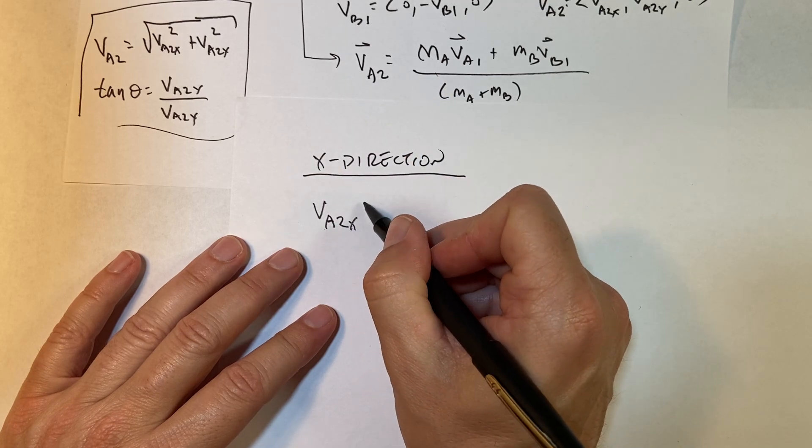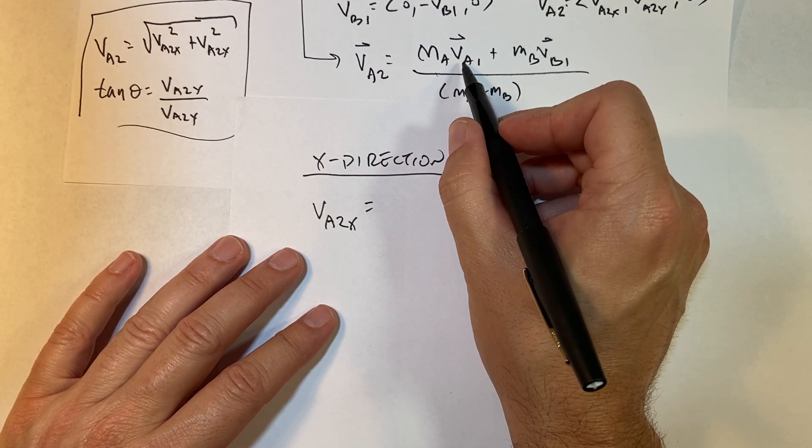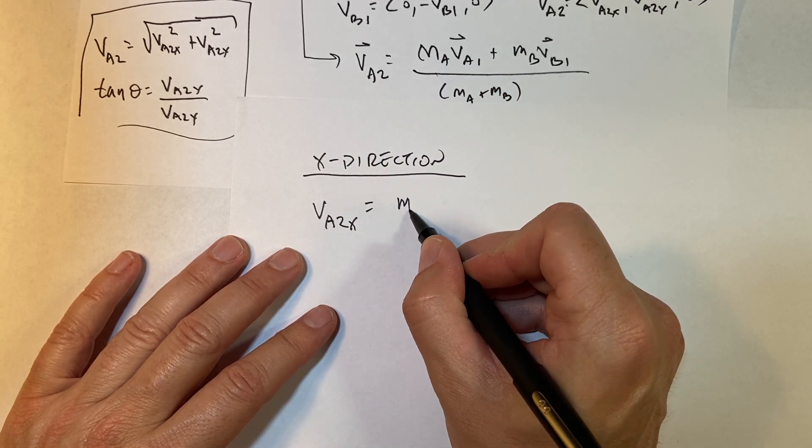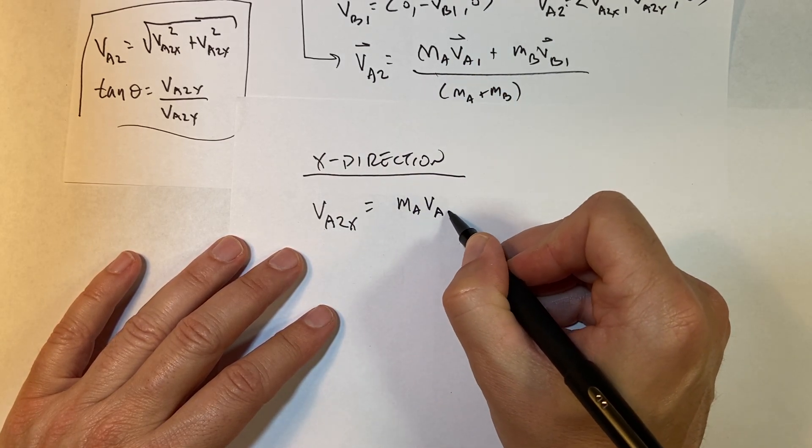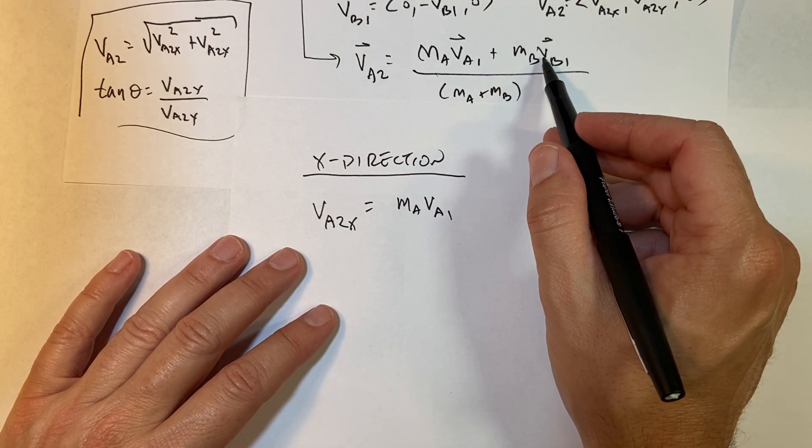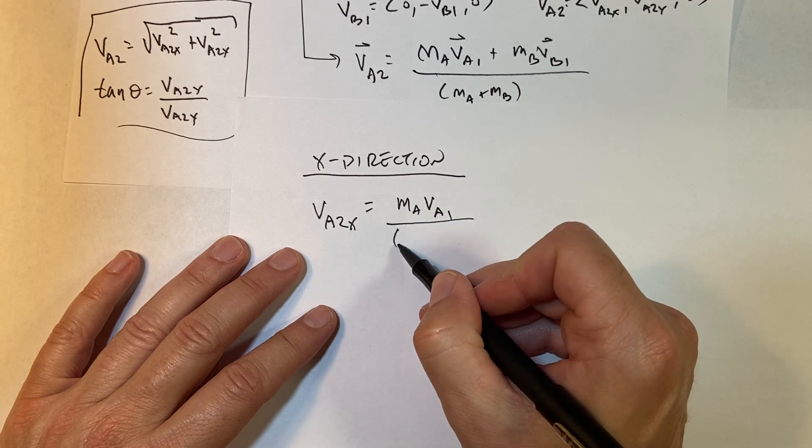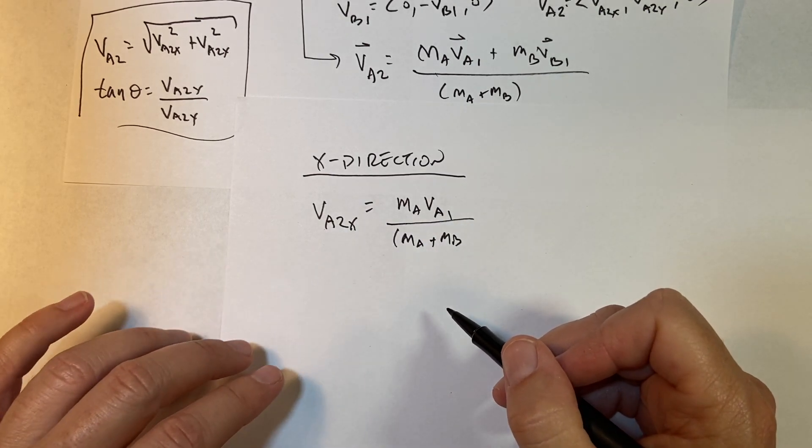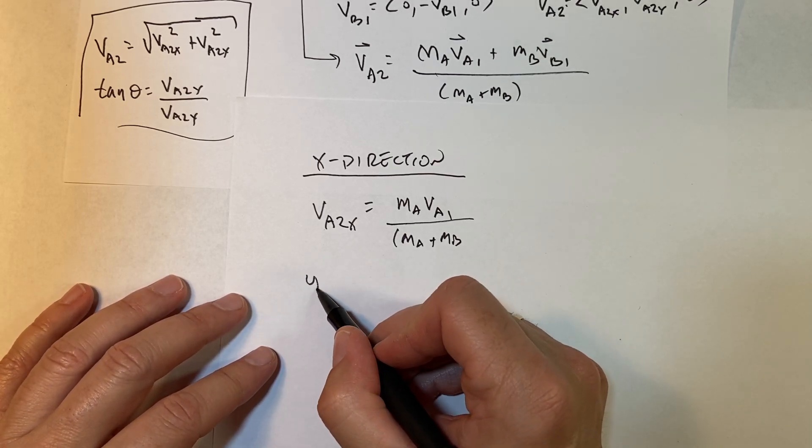I get v_A2x equals—what's the x-velocity initial? It's going to be m_A v_A1. It's just all in the x-direction. What's the x-velocity of that one? Well, it was not moving in the x-direction, so it's zero. So it's just m_A v_A1 over (m_A + m_B). That's it.